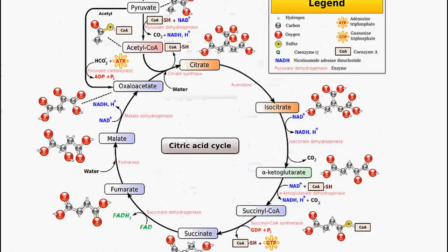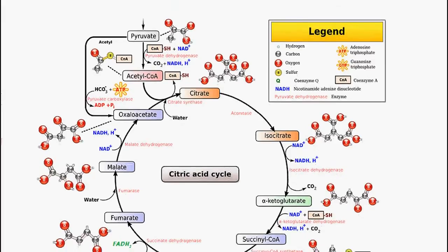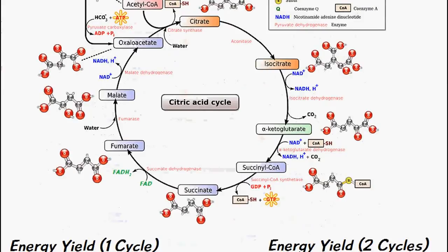Now since we have two molecules of acetyl-CoA because we initially had two molecules of pyruvate from one molecule of glucose, the TCA cycle or the citric acid cycle goes around twice for each acetyl-CoA molecule.